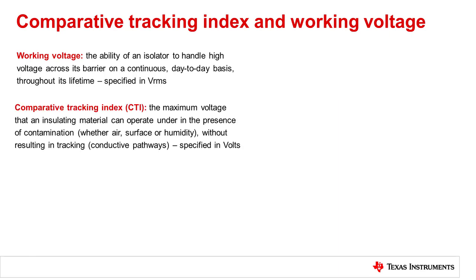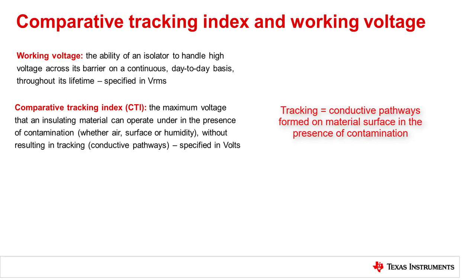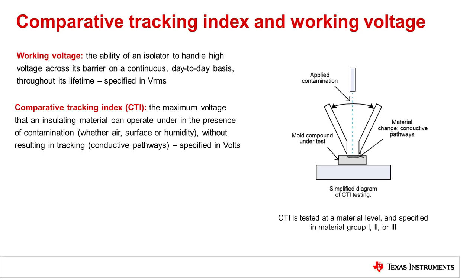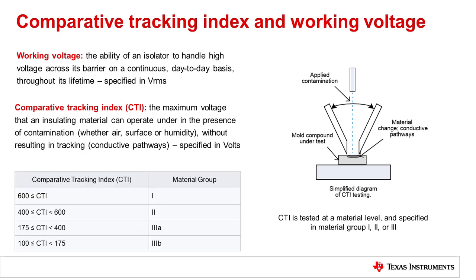The quality of the mold compound and the materials used for a digital isolator are important factors in creepage and clearance requirements. Comparative Tracking Index, or CTI, is used to describe the maximum voltage that an insulating material can operate under in the presence of contamination — whether air, surface, or humidity — without resulting in tracking. Tracking is the creation of conductive pathways on the surface of an isolation material and is characterized through standardized material testing. If conductive paths are established on the surface of an isolator, the potential for arcing increases. For this reason, working voltage and package material level with a known CTI are directly related to end equipment creepage and clearance distance requirements.